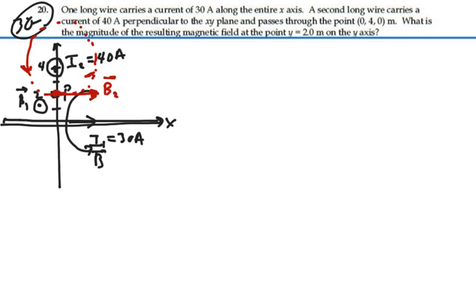So really, we're going to have, if we took a top view of all this, we'll end up with a B2 that's going in the positive x-direction. And then we have a B1